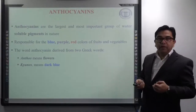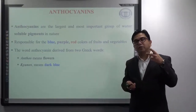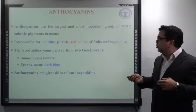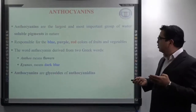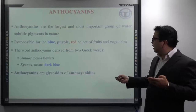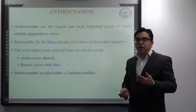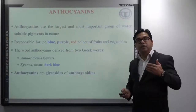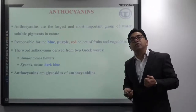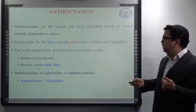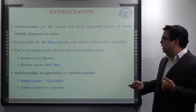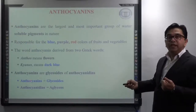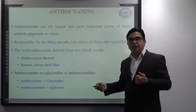Before I proceed, I would like to mention two similar terms where students often get confused. Anthocyanidine is the name of the aglycone part, whereas anthocyanins are known as glycosides of anthocyanidine. That means when sugar is attached to anthocyanidine, they are known as anthocyanins. So once again: anthocyanins means glycosides, whereas anthocyanidines means the aglycone. When the aglycone is attached to sugar, it becomes anthocyanins. Don't get confused between the two terms.